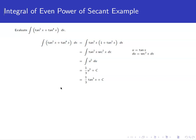du is equal to secant squared x dx. When we make our substitution, now we get u squared du for our integral.